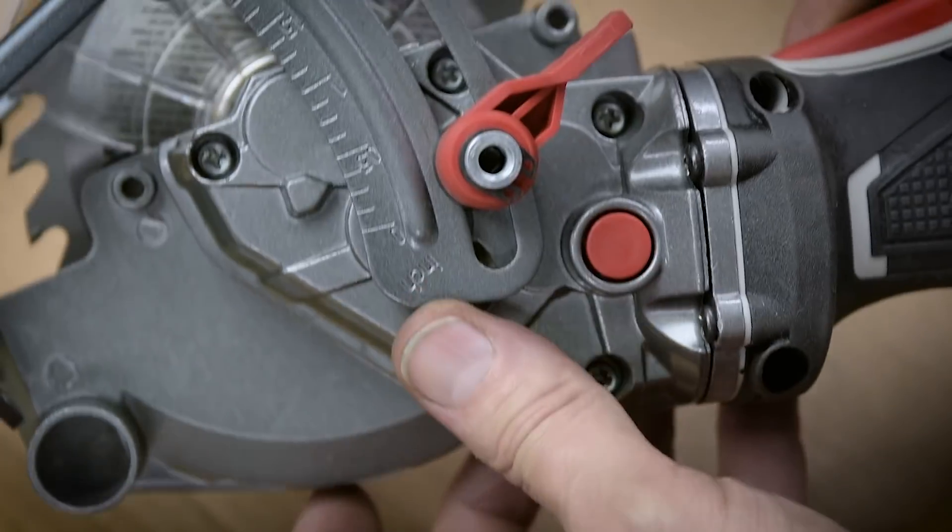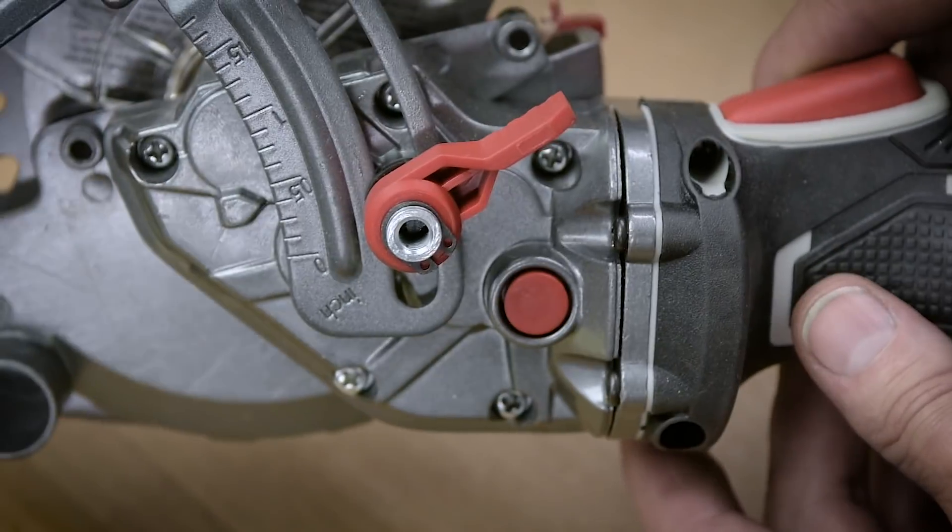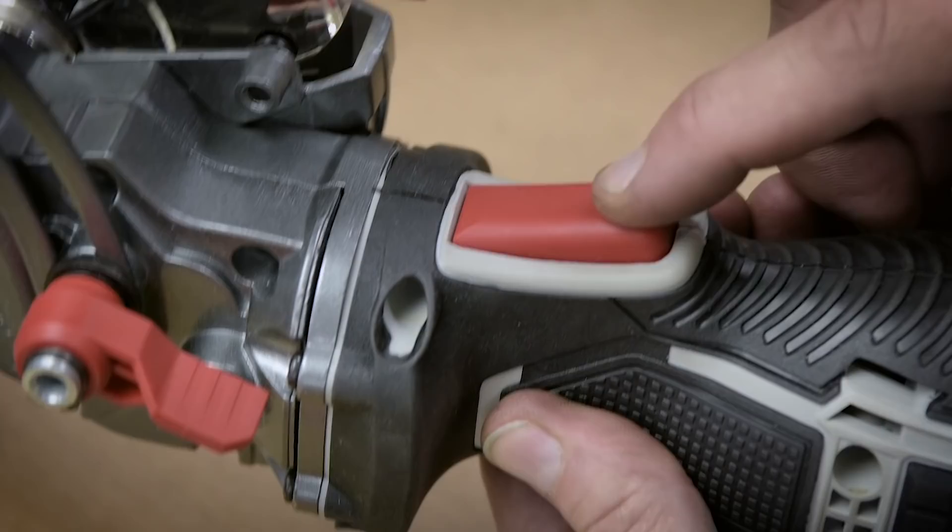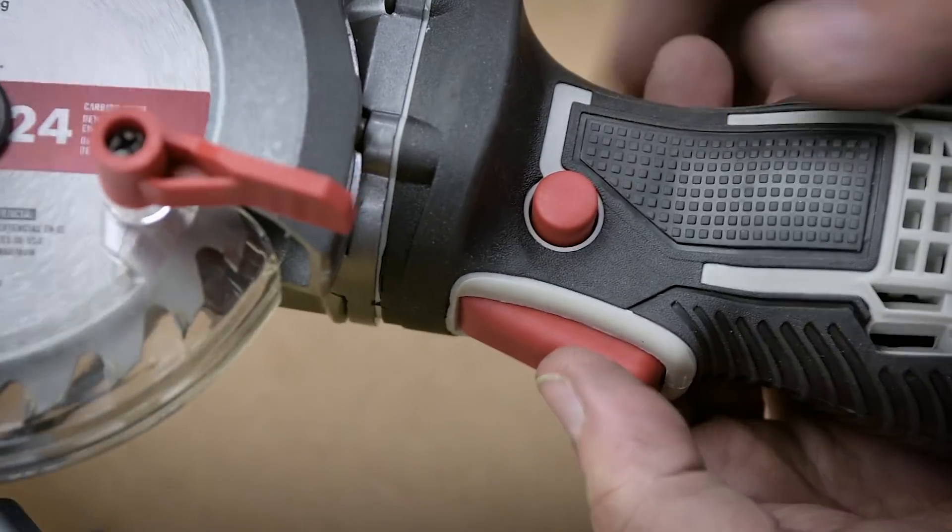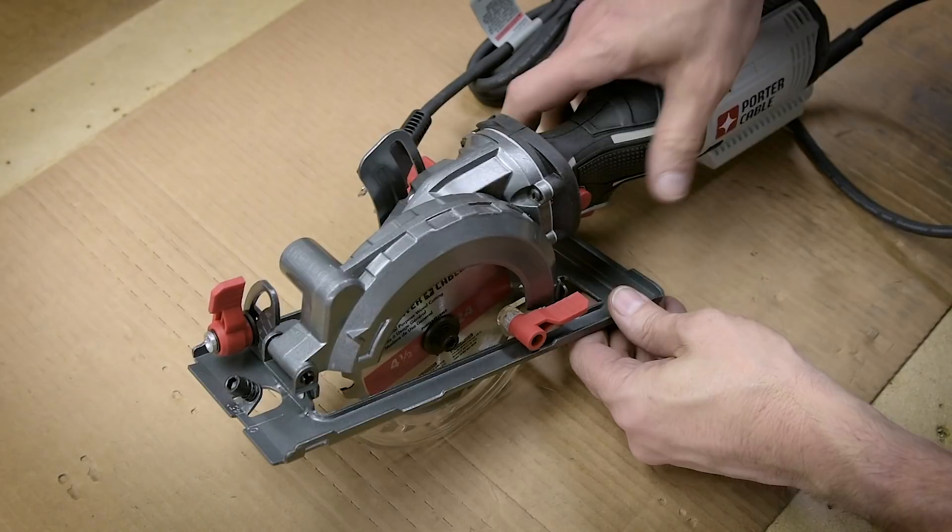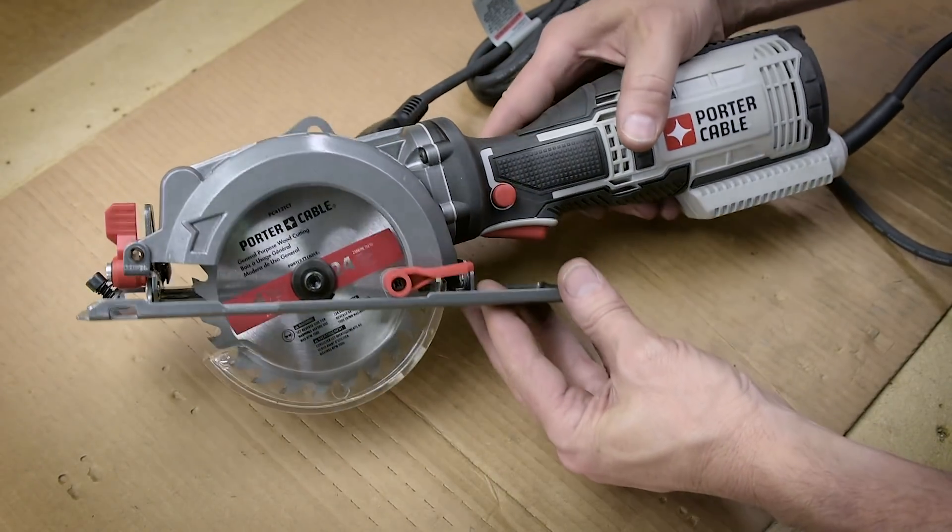There were three other saws from other manufacturers there that were similar in design, but they had plastic gearboxes. This was the only one that was all metal. I also had to come up with a way to either bypass this switch or lock it in the on position. I'm sure a nice strong zip tie can take care of that.